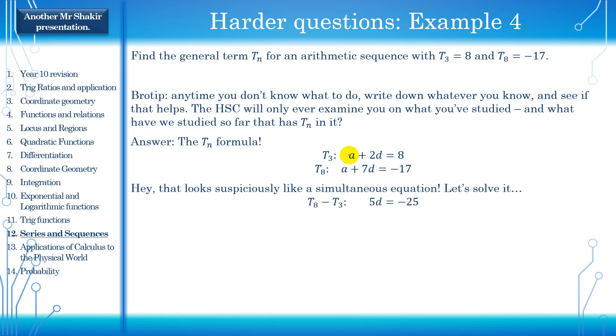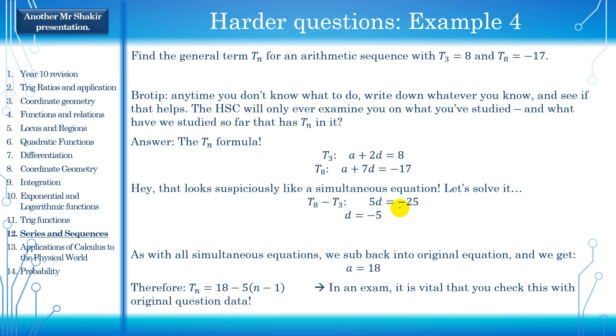We solve it like a simultaneous equation as per normal. We note that a is common, so we can just subtract this, the eighth term minus the third term. That'll get rid of the a, and you get 5d minus 25. 5d minus 25. And solve, you get d, easy. Sub it back in. So you get a, a is equal to 18. Now, check, you always check. You must always check in an exam. So, let's try. For the third term, if we sub a is equal to 18 and d is equal to negative 85, do we get 8 or not? And similarly, check with negative 17. Honestly, it takes like 15 seconds in a calculator. Just check it, and you'll know if you did it right or wrong.